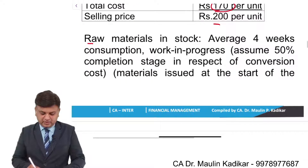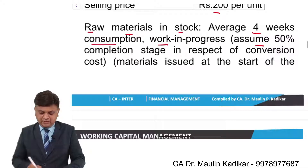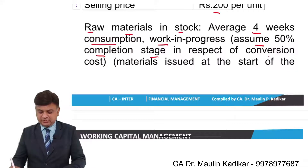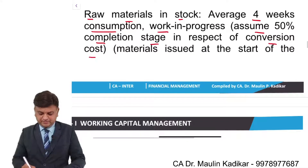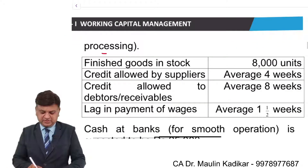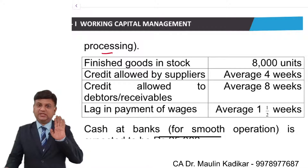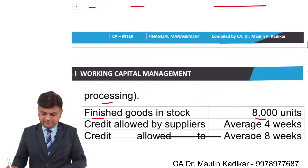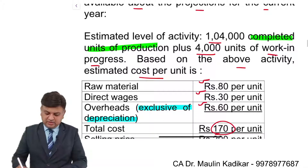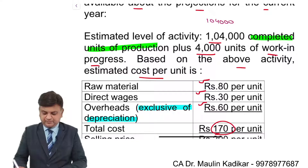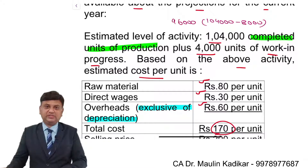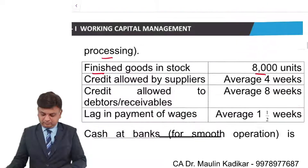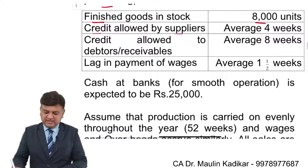Raw material in stock: on average four weeks' consumption. WIP is at 50% completion stage in respect of conversion cost; material is issued at the start of processing, so the completion stage for material is 100%. Finished goods: 8,000 units. This means one lakh four thousand minus eight thousand, so ninety-six thousand units must have been sold.